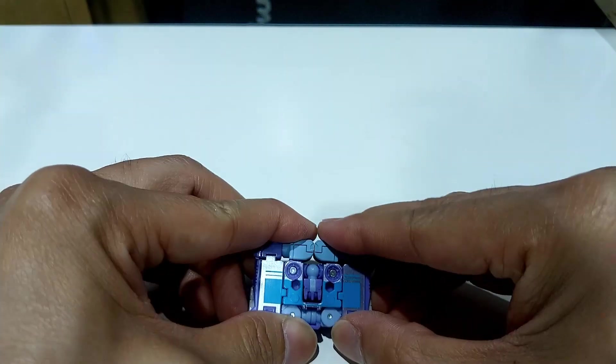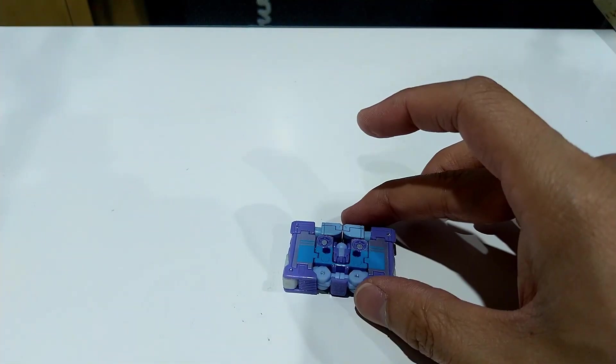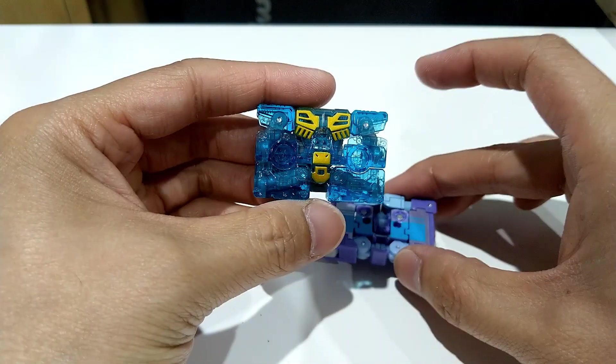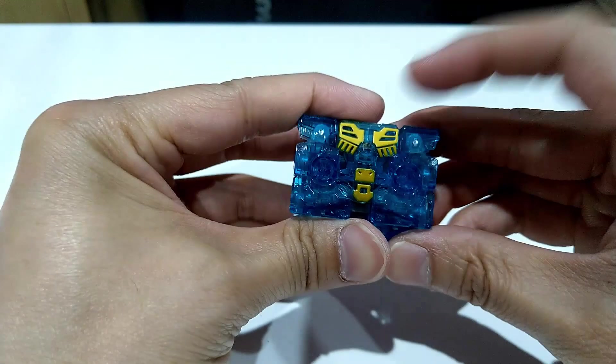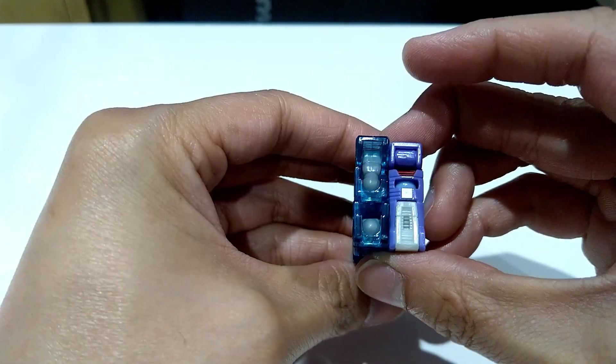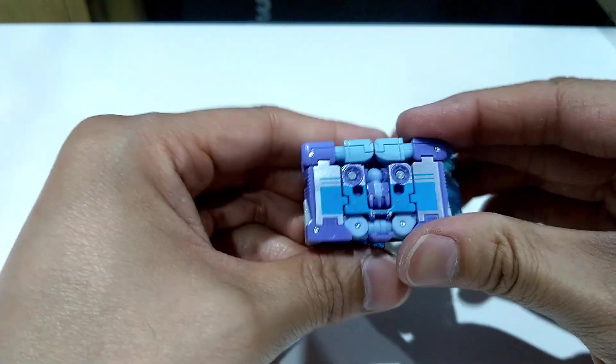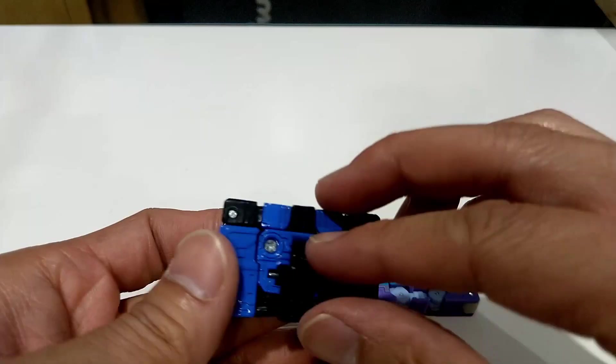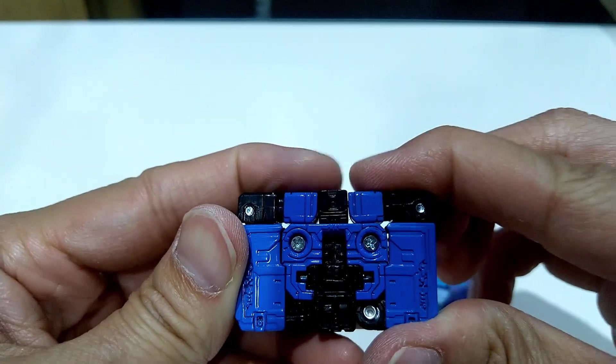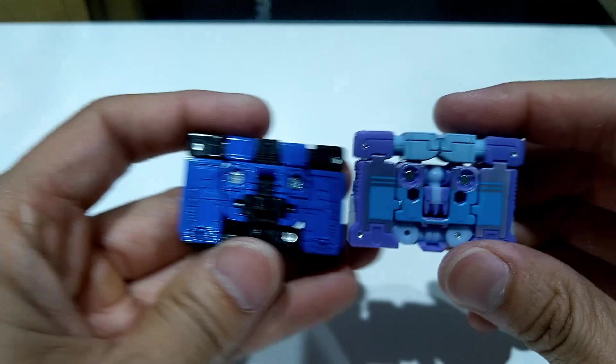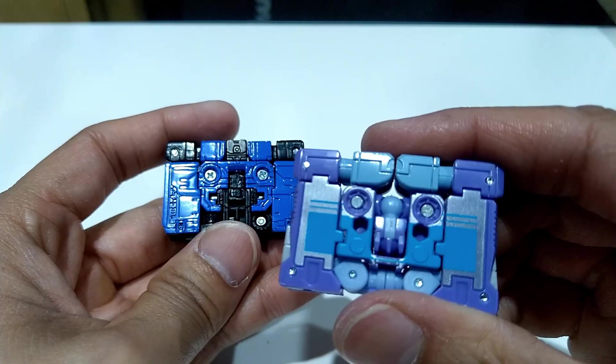So now I guess for cassette comparisons. This here is Eject. So check size differences, there are none, exactly the same.